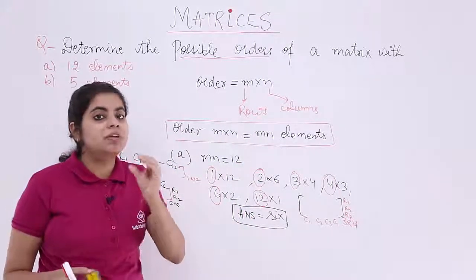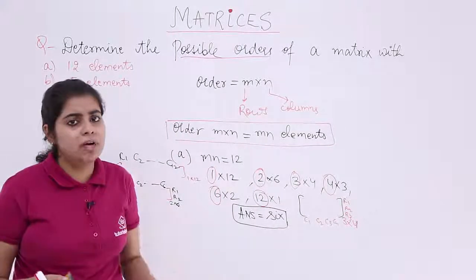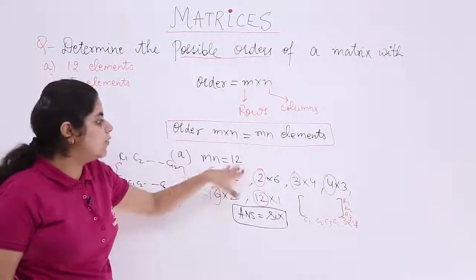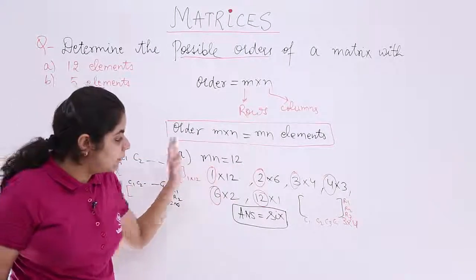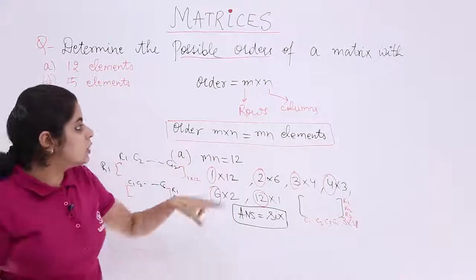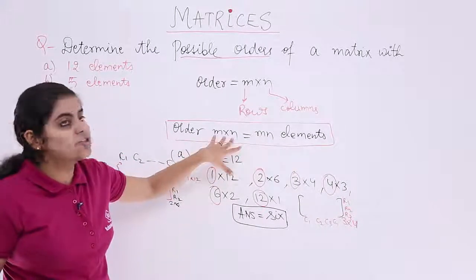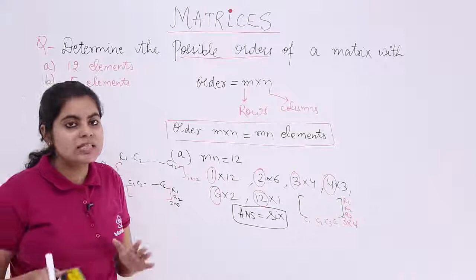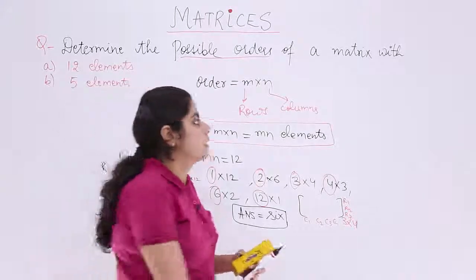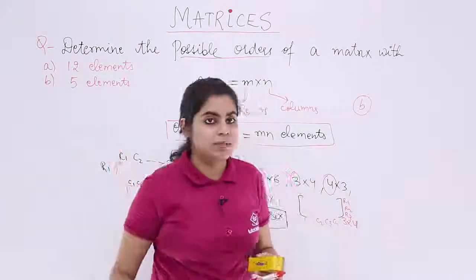This question tells me that if number of elements are given to me as 12 or 8 or 5, then there can be more than 1 possible order - not only 12×1 and 1×12 but many possible orders exist. And that is why I know the relation M×N means MN elements. So if elements are given I can actually make many factors out of it. This is about the first part, 12 elements. What about the second part?